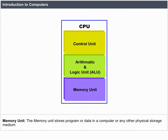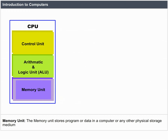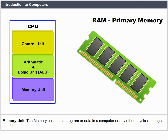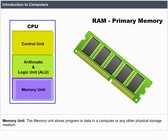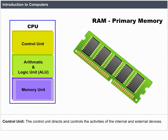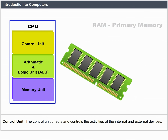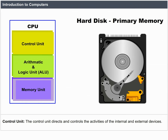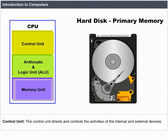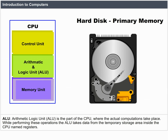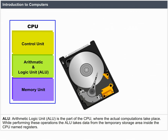Memory Unit: The memory unit stores programs or data in a computer or any other physical storage medium. Control Unit: The control unit directs and controls the activities of the internal and external devices. ALU: Arithmetic Logic Unit.